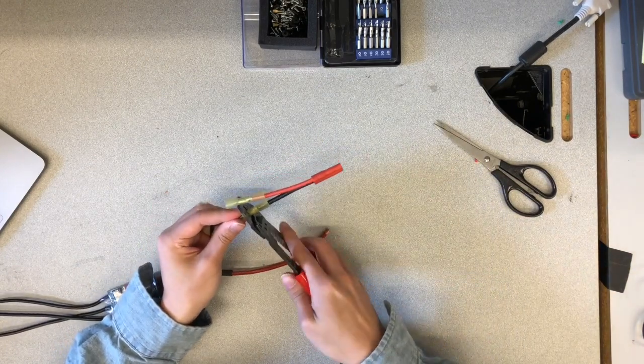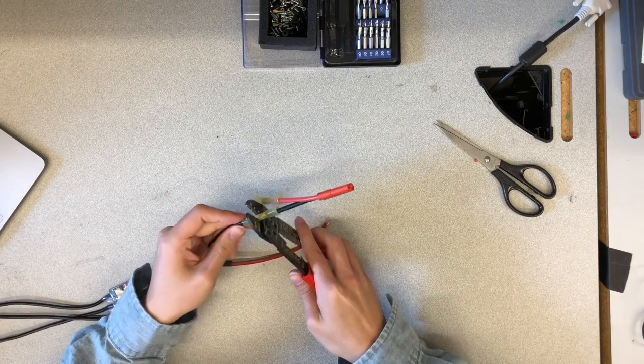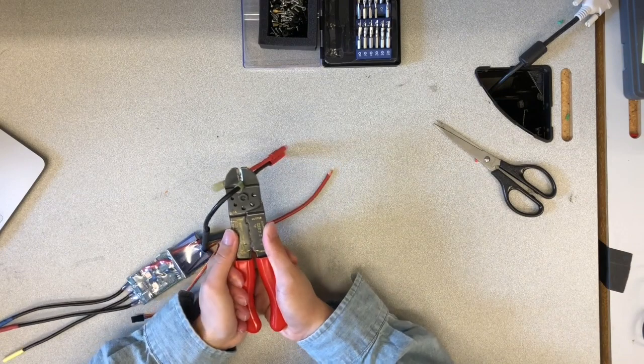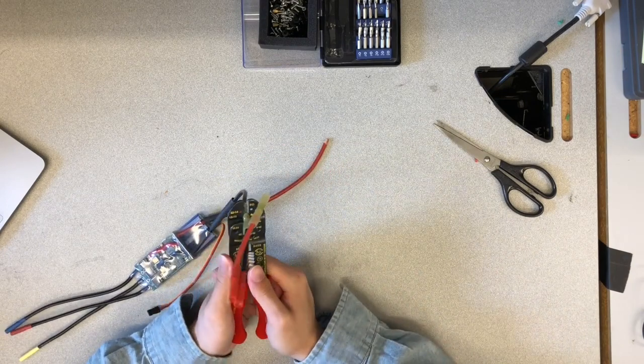Now we have to repeat the same process by inserting the stripped end of the VESC corresponding battery wires into the uncrimped end of the solderless wire connector.